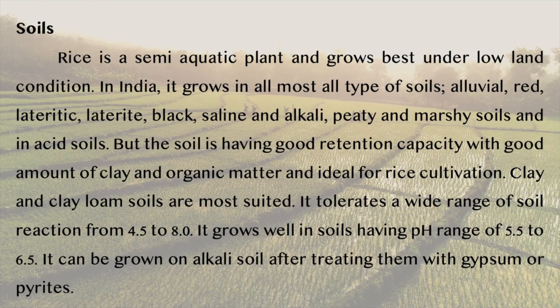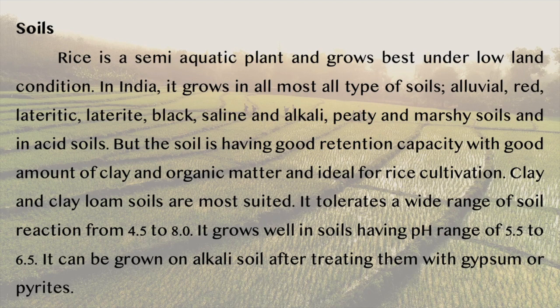Rice is a semi-aquatic plant and grows best under lowland conditions. In India, it grows in almost all types of soils — alluvial, red, lateritic, laterite, black, saline, alkali, peaty and marshy soils, and in acid soils. However, if the soil has good water retention capacity with good amounts of clay and organic matter, it is ideal for rice cultivation. Clay and clay loam soils are best suited. It tolerates a wide range of soil reaction from pH 4.5 to 8.0. It grows well in soils having a pH range of 5.5 to 6.5. It can be grown in alkali soil after treating it with gypsum or pyrites.